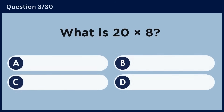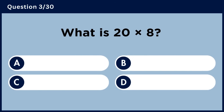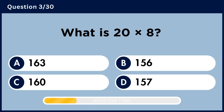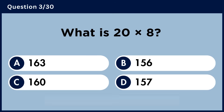What is 20 multiplied by 8? Answer C: 160.